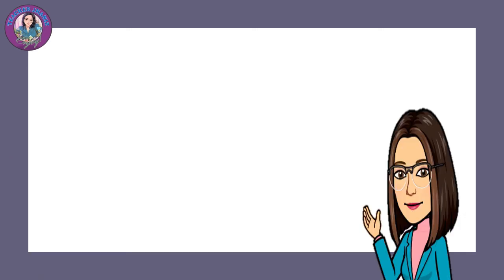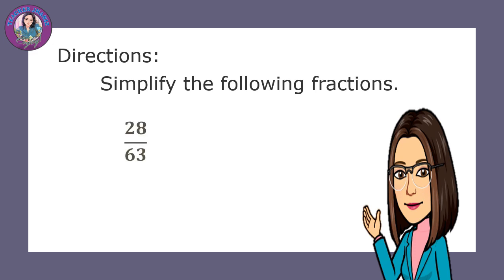Now, for your activity, do this. Directions: Simplify the following fractions: 28 over 63, 21 over 35, 16 over 72. You may apply method 1 or method 2 in finding the simplest form of these fractions.